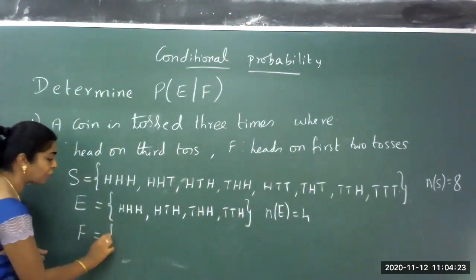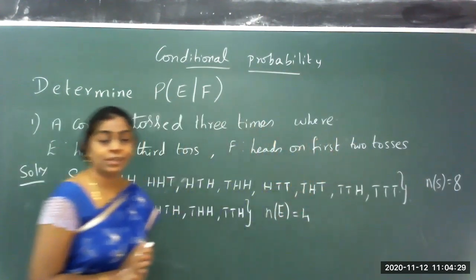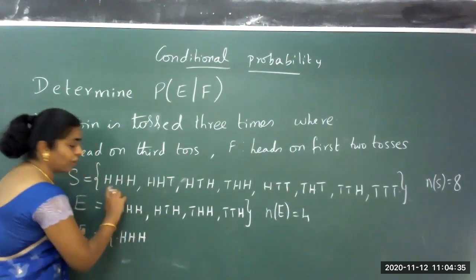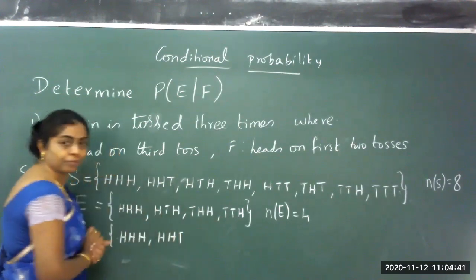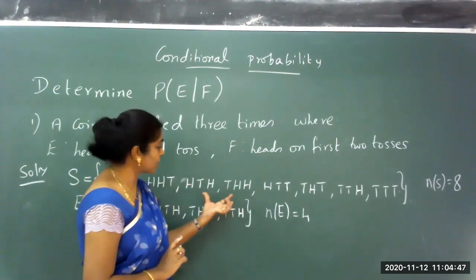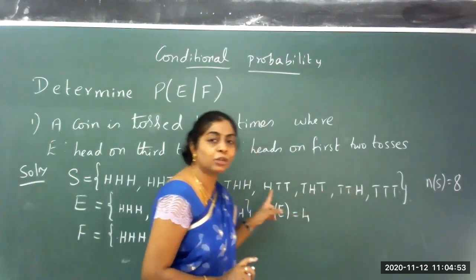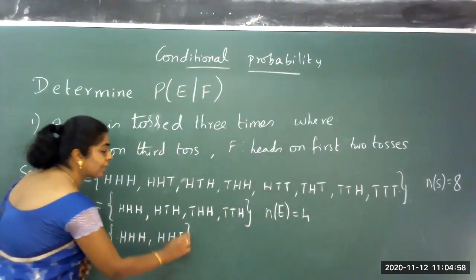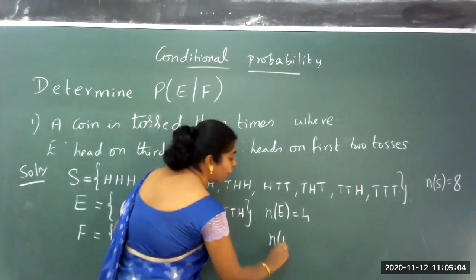Event F is heads on the first two tosses. If I consider HHH — first two are heads, satisfied. HHT — first two are heads, satisfied. But in HTH the second one is tail, I cannot consider. THH — first one is tail, I cannot consider because the first two should both show heads. So only HHH and HHT are the two possible cases. The number of elements in F is 2.